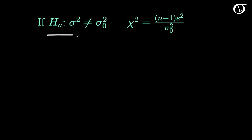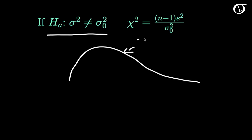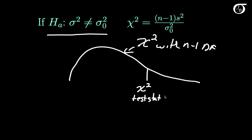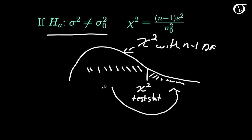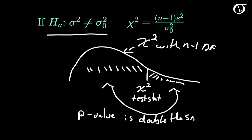If our alternative hypothesis is that sigma squared is not equal to the hypothesized value, we reject the null hypothesis for very large or very small values of the test statistic. Drawing out the chi-square distribution with n-1 degrees of freedom, suppose we calculate our chi-square test statistic and get a value in one tail. The p-value is twice the smaller area — double the smaller tail area — giving us the probability of getting a test statistic this extreme or even more extreme. If using the rejection region approach, we have rejection regions in both tails.